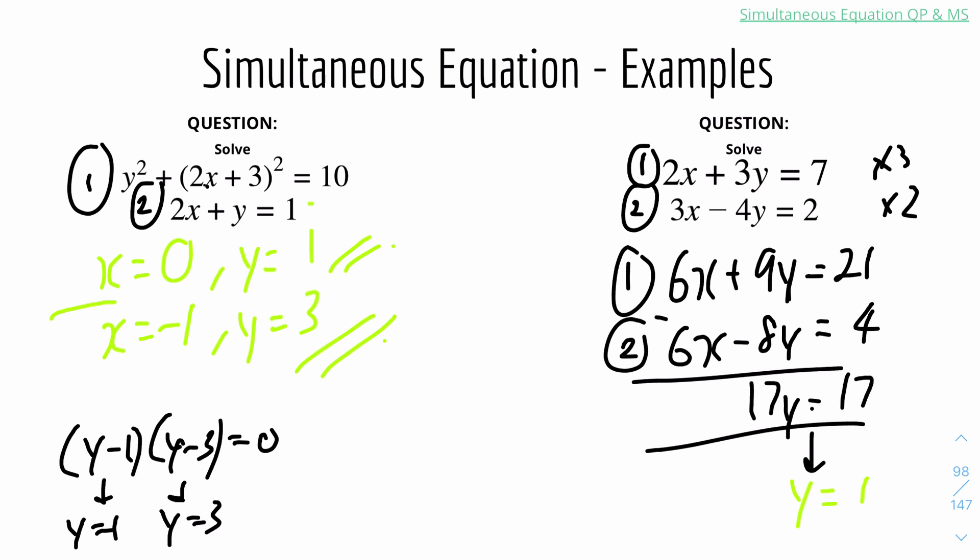Y equals 1. And the corresponding x value would be, let's just use the first equation, 2x plus 3y equals 7. We know y equals 1, so it will be 2x plus 3 equals 7. And 7 minus 3 will be 4. And 4 divided by 2 will be 2. Therefore, when x is 2, y is 1. And that's it.